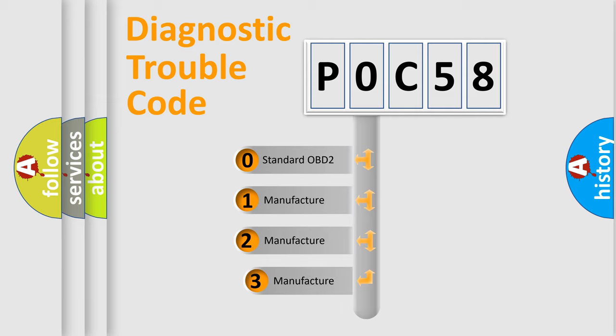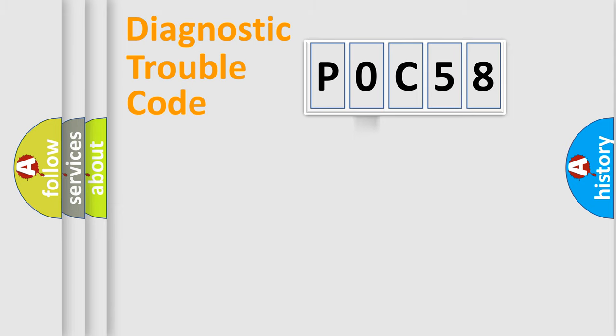If the second character is expressed as zero, it is a standardized error. In the case of numbers 1, 2, or 3, it is a manufacturer-specific expression of the car-specific error.